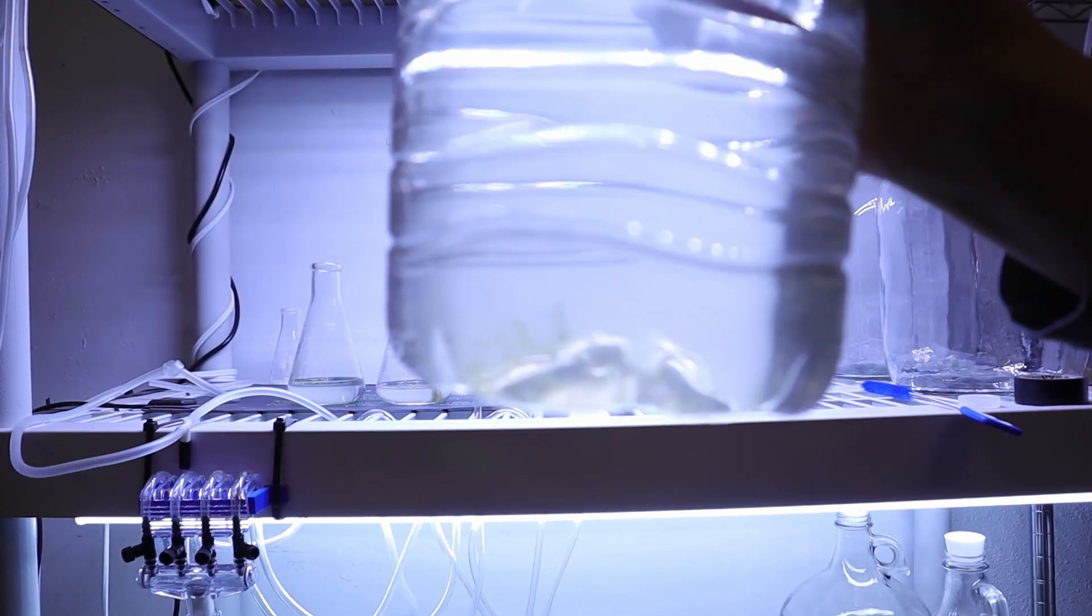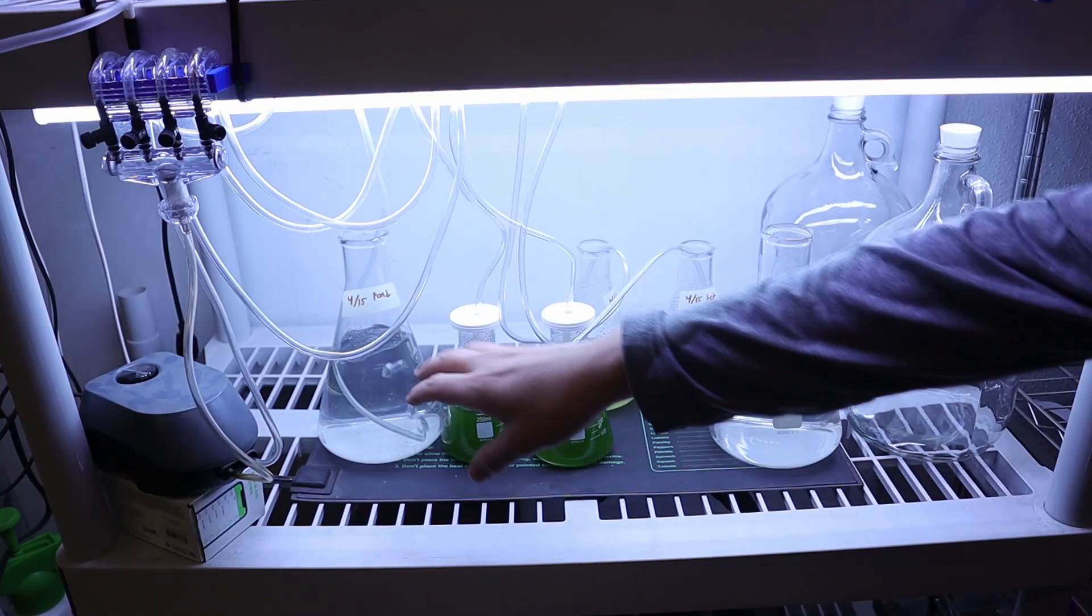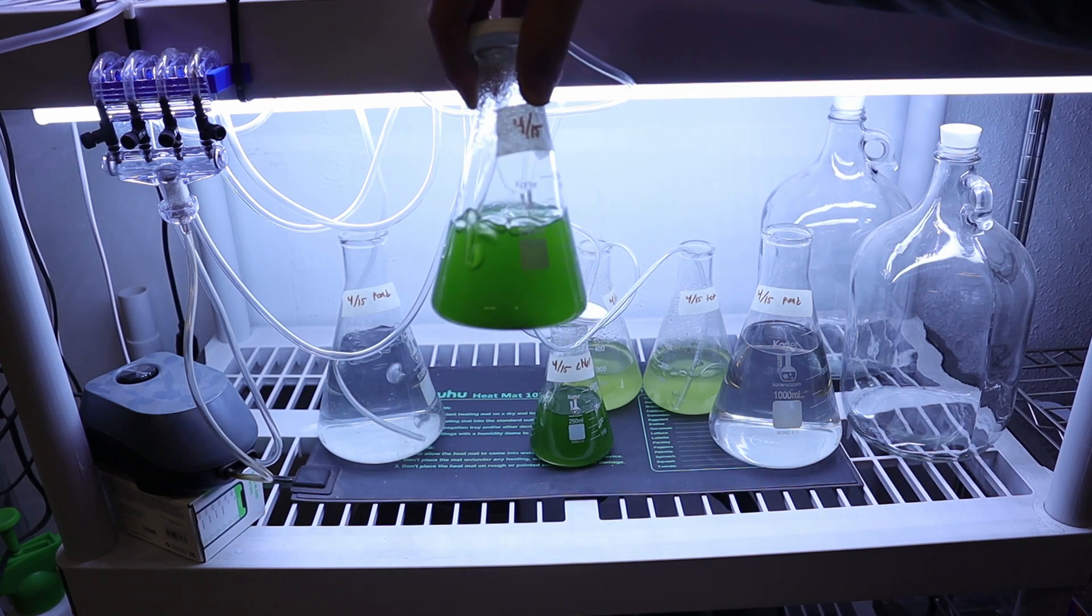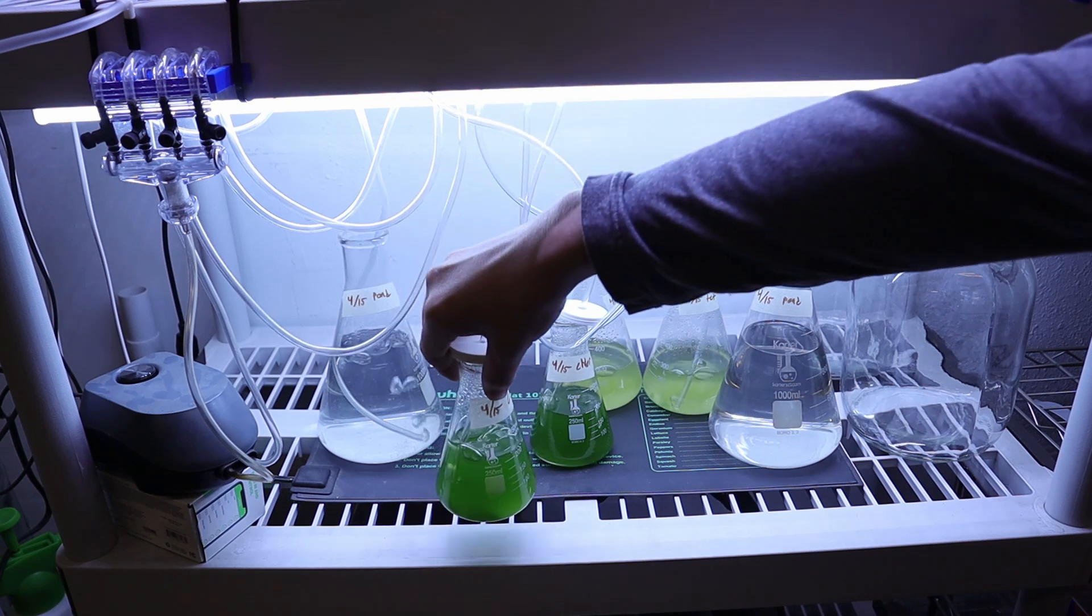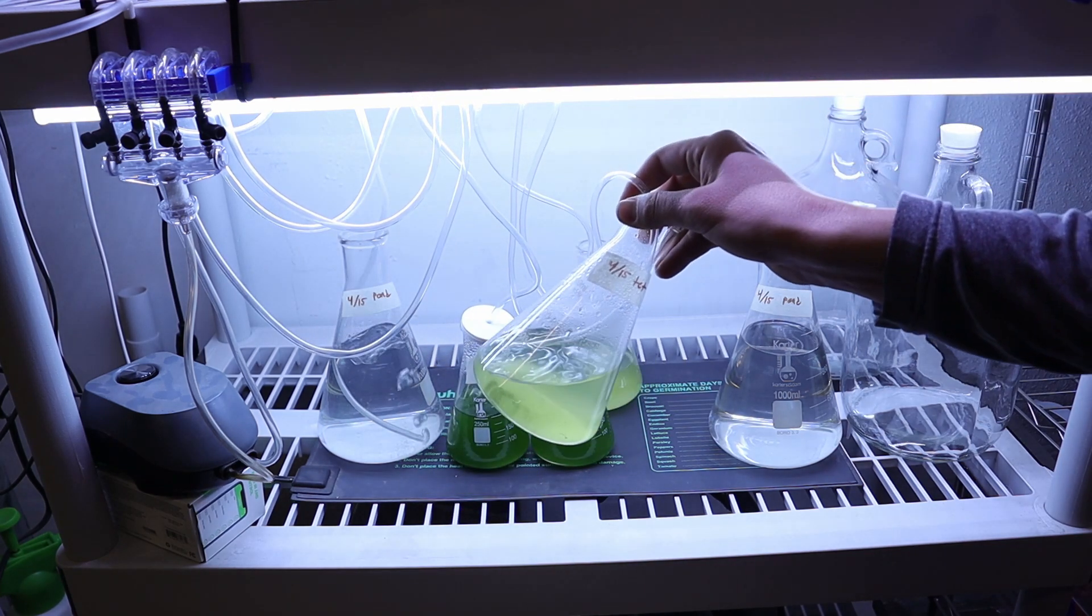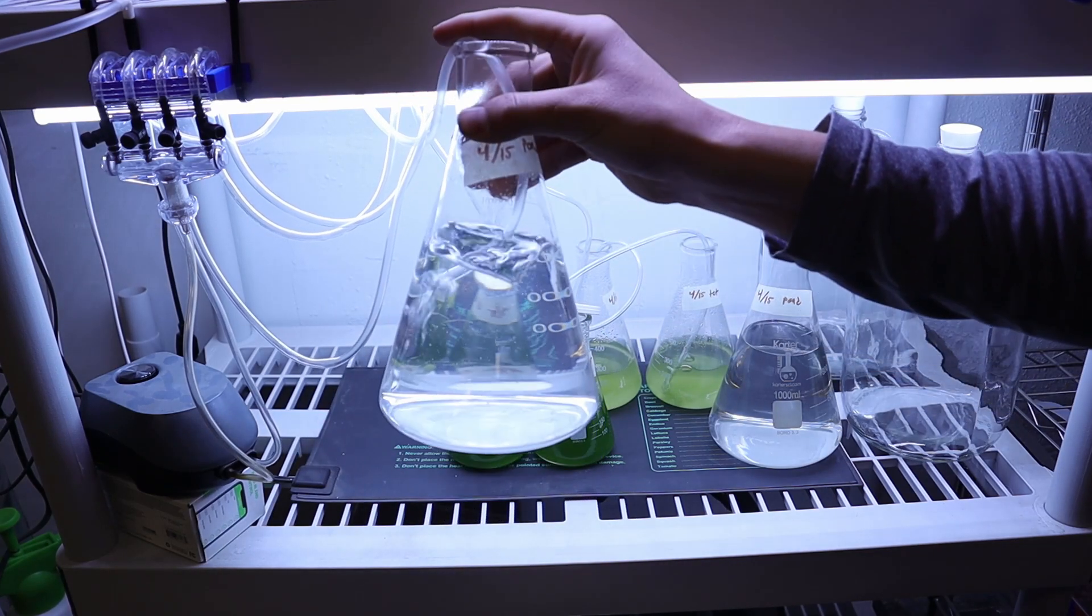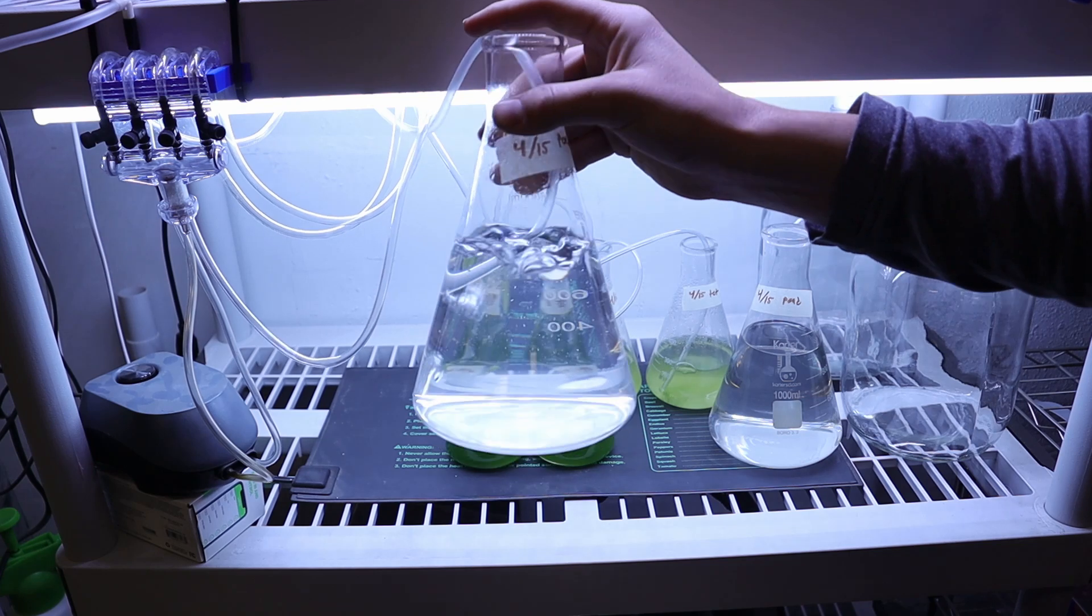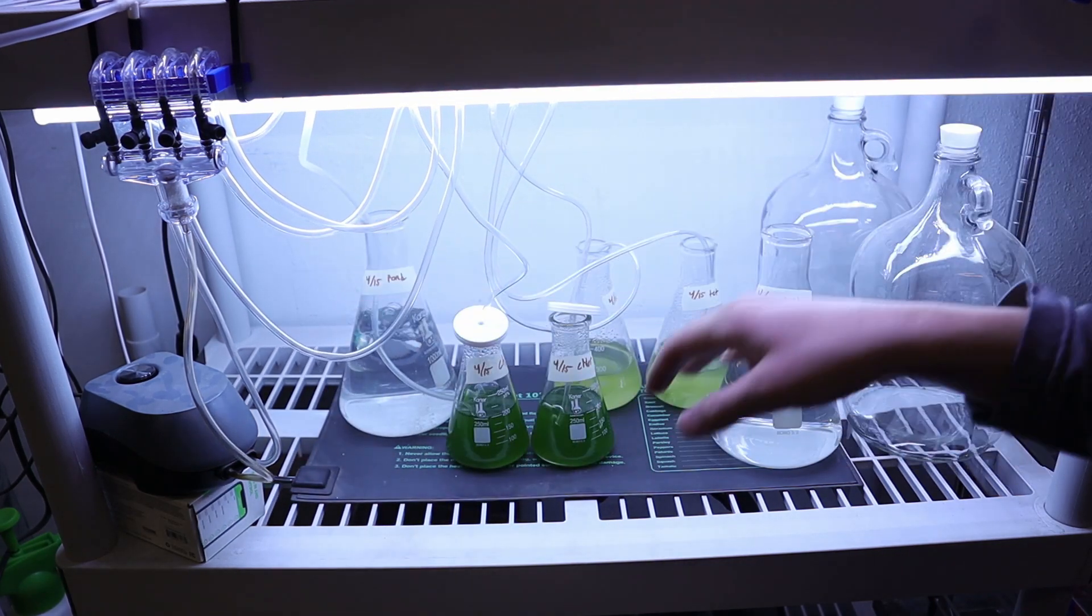So everything down here is also looking fantastic. You can see some nice green in there from the chlorella. The tetrasillamus has got some good growth going on down in there, and we're starting to get a little bit of growth in the pond water. It's hard to tell because it's so clear, but a little bit of growth in the pond water.